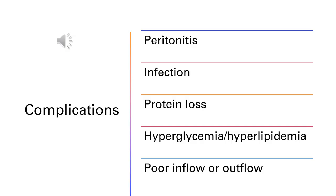Complications of peritoneal dialysis include poor inflow or outflow, hyperglycemia or hyperlipidemia — because glucose and sometimes lipids are in the dialysate — protein loss, infection, or peritonitis. For these complications, patients need to be able to identify them and let the provider know.